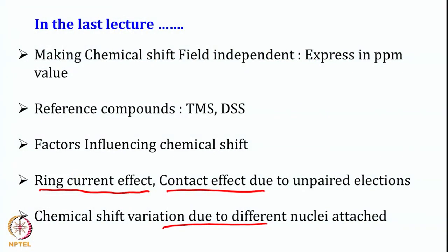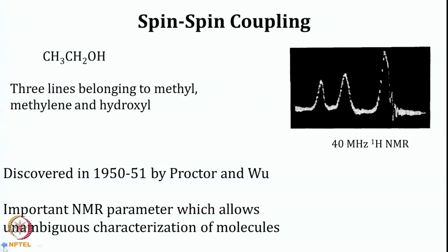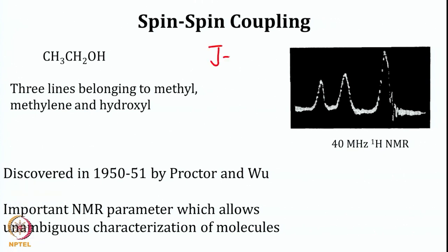So now from here we will move forward and start looking at another very very crucial parameter, that is called spin-spin coupling, also called J coupling or scalar coupling. This is called scalar coupling because it does not depend upon orientation.